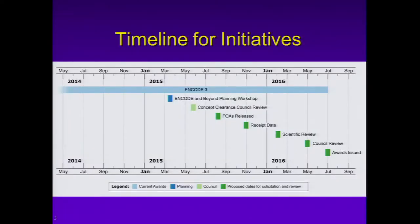This is the timeline for the initiatives. As Mike mentioned, the current phase of ENCODE was funded in 2012, and funding will be ending in July of 2016. We had the planning workshop that Mike just described in March of this year. We're presenting the concept clearances to this council in May of this year. If these concepts are approved, we will be releasing the funding opportunities at the end of the summer or in August with a receipt date in November. Study review will be next winter, probably in February or early March, and then next May we'll be bringing these applications back to council for review along with the funding plan, then issuing awards in July of 2016.